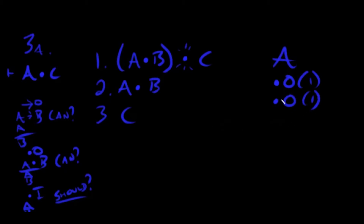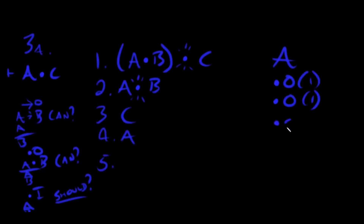Now we go back to the top of the list. No arrows anywhere, but we have a new dot not in parentheses. Let's break it apart: we get 'a' by itself — and-out from line two — and 'b' — also and-out from line two.